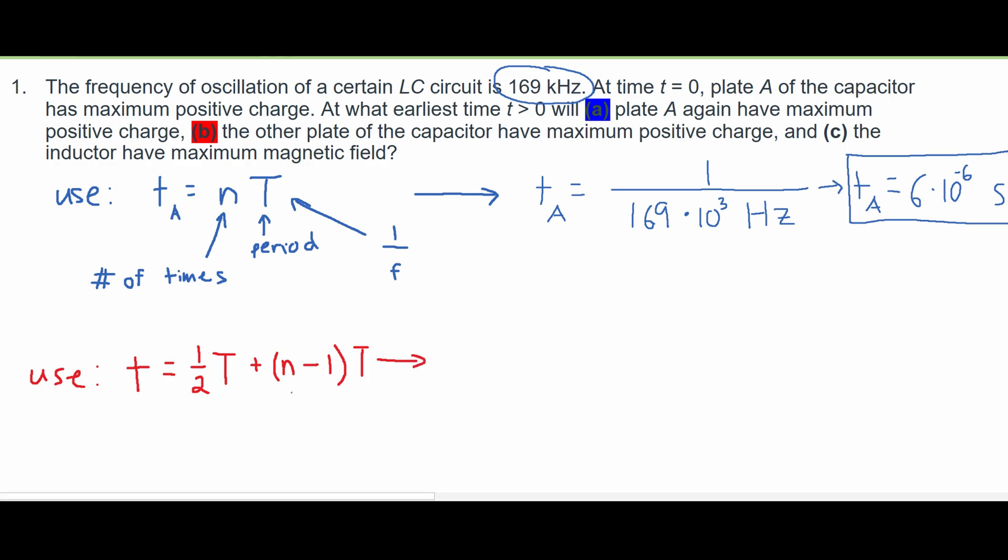So we'll notice if we plug in our 1 here, because our N many times is just 1, we're going to get a 0. So that is just going to leave us with T equaling 1 half of T.